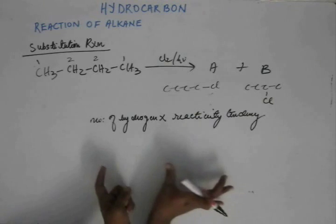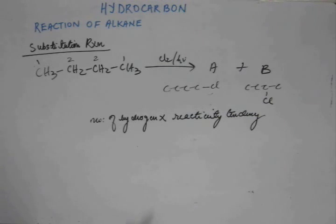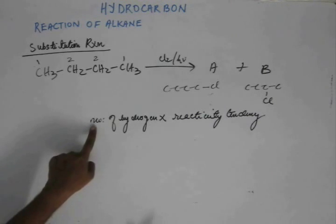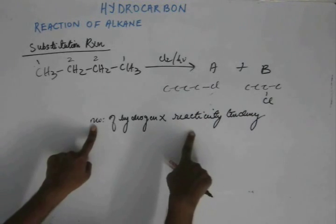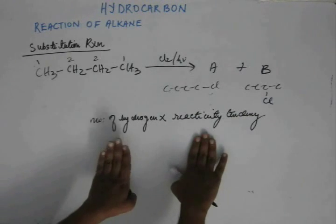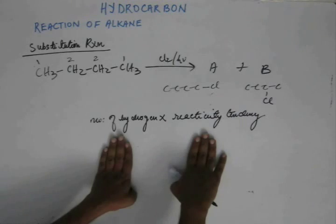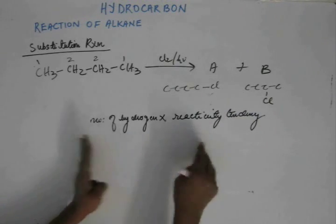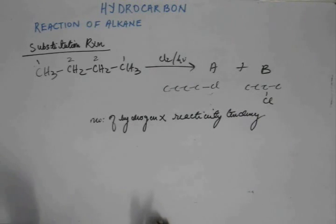If you get these two products, that will give you the effective reactivity rate on that site. Number of hydrogen on that site and the reactivity tendency on that site. If you multiply these two factors, this is the kinetic factor and this is the thermodynamic factor. If you club these two together, that will give you the effective reactivity on that site.